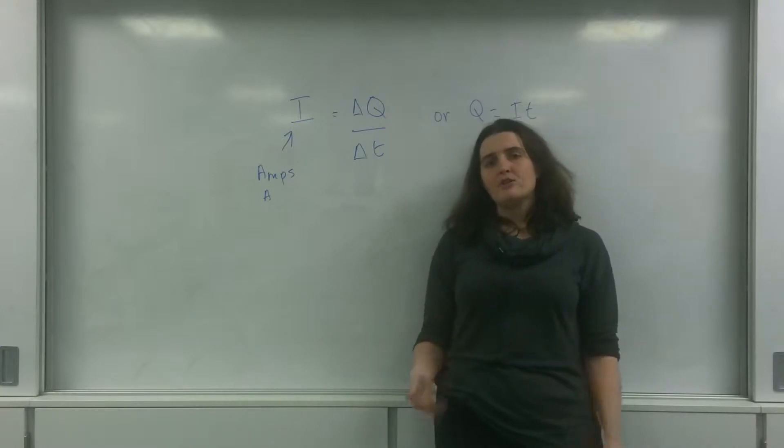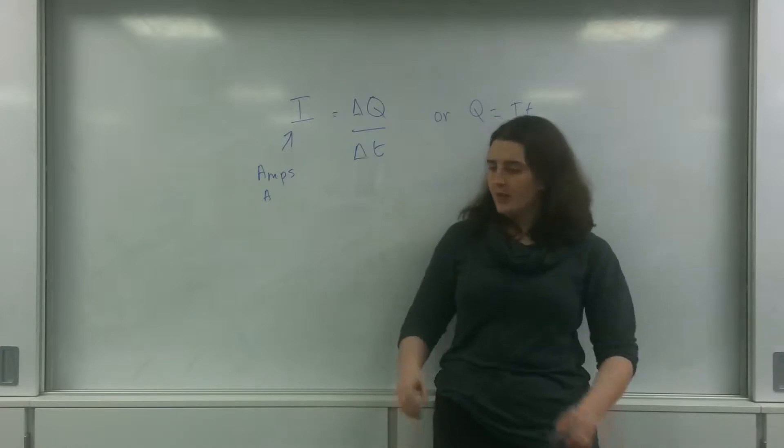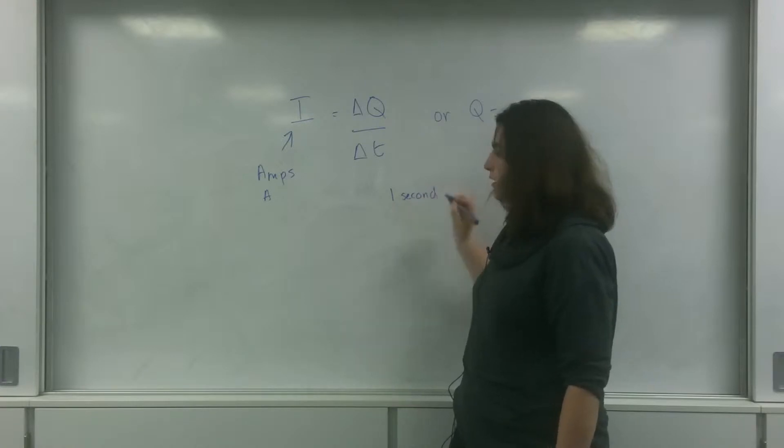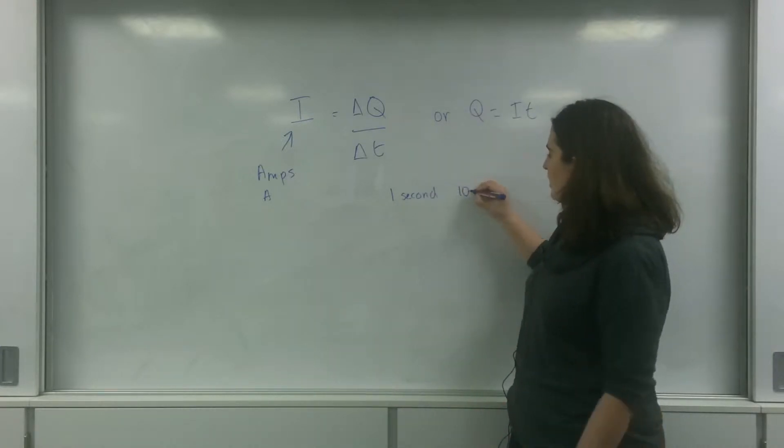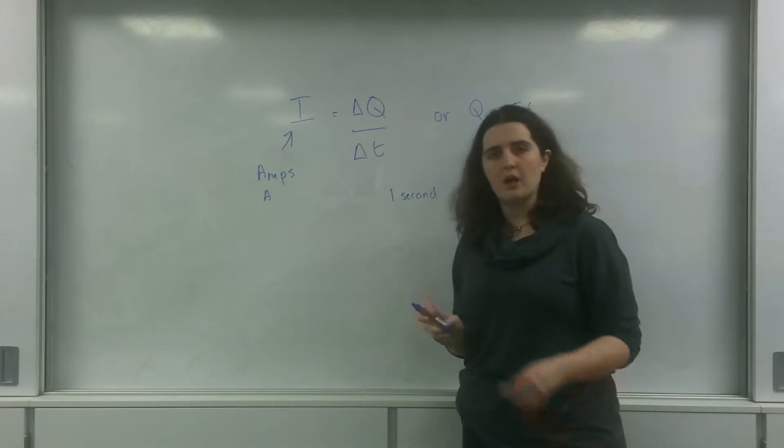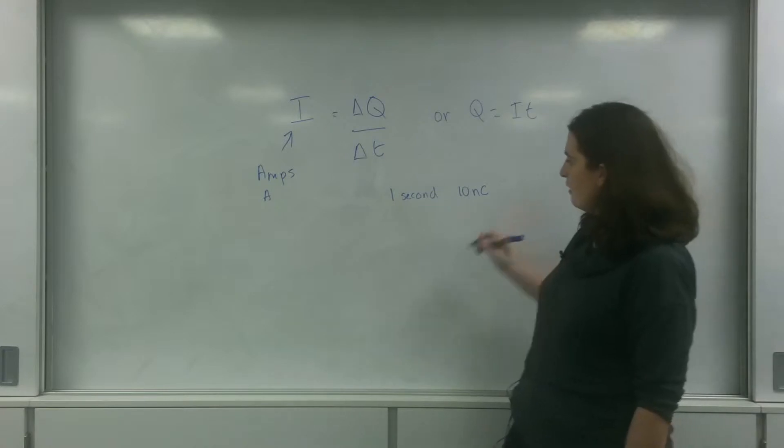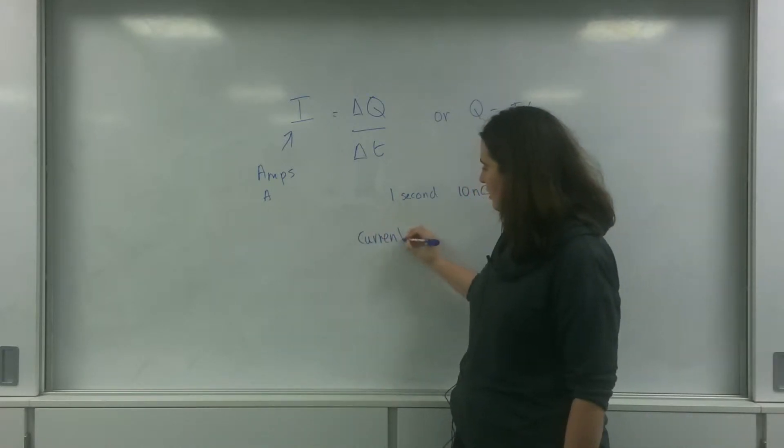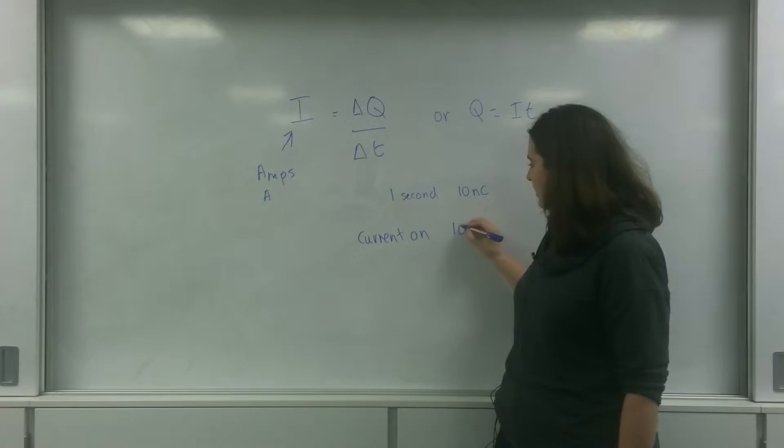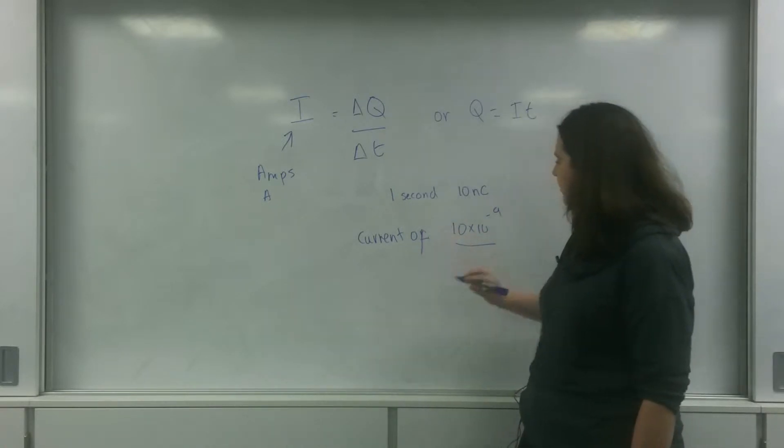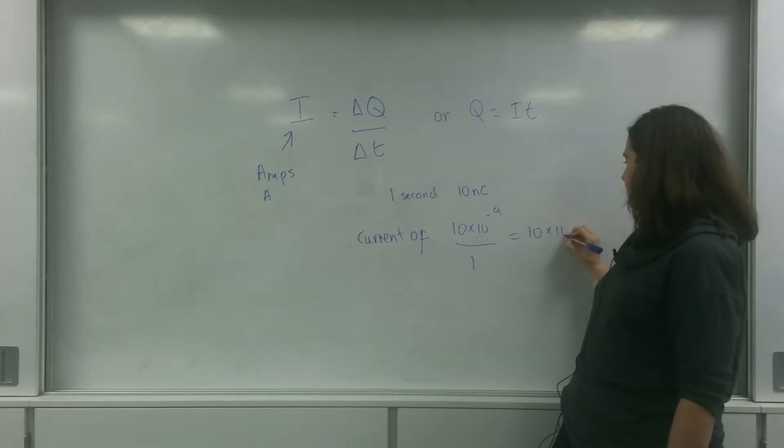So current depends on how much charge passes a point in one second. If in one second I have 10 nanocoulombs of charge, I would have a current of 10 times 10 to the minus 9 divided by 1, which is 10 times 10 to the minus 9 amps.